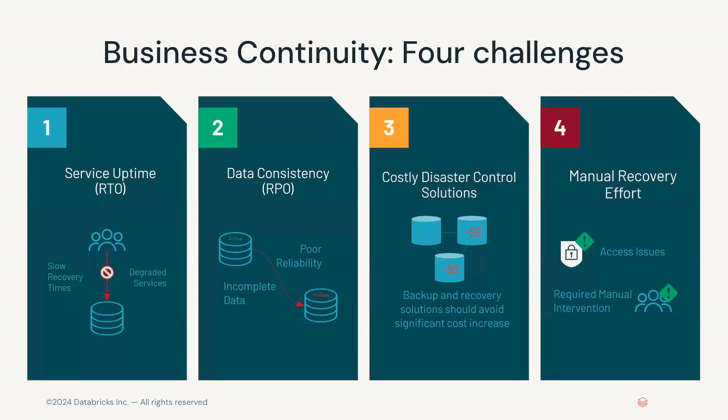When you talk about business continuity and DR, there are four main pillars. The first is uptime — RTO — which means when a service has some kind of degradation or outage, how long does it take to get back to fully operational? So if EC2, S3, ADLS, or Azure VMs go out right now, how long is it going to take to recover those services and start operating again?